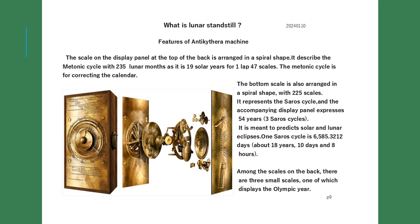Features of the Antikythera machine: the scale on the top back display panel is arranged in a spiral shape describing the Metonic cycle — 235 lunar months equal to 19 solar years, with 47 scales per lap. The Metonic cycle is used for correcting the calendar. The bottom scale is also in a spiral shape with 225 scales, representing the Saros cycle. The accompanying display panel expresses 54 years — three Saros cycles — used to predict solar and lunar eclipses. One Saros cycle is 6,585.3212 days, approximately 18 years, 10 days, and 8 hours. Among the scales on the back, there are three small scales, one of which displays the Olympic year.